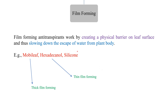The film forming antitranspirants work by creating a physical barrier on the leaf surface, thus slowing down the escape of water from the plant body. For example, mobile if, hexadecanal, and silicon can act as film forming antitranspirants.